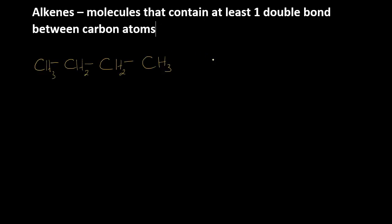You know from our charts that the but refers to the fact that there are four carbons, and the ane tells us that there are only single bonds between the carbons.